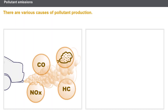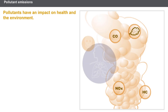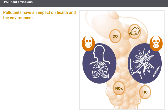There are various causes of pollutant production. Pollutants are considered harmful and have impacts on health, including irritation of the respiratory tracts and eyes, faintness, and muscular weakness. These pollutants cause pollution fogs known as smog and acid rain.